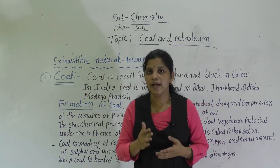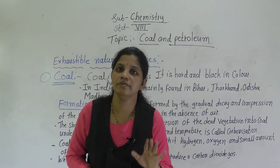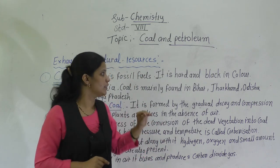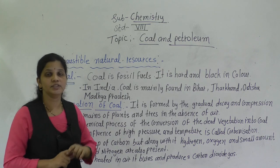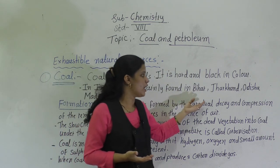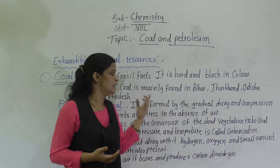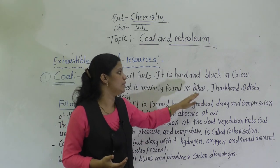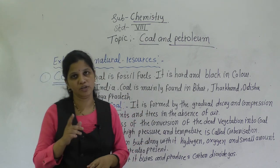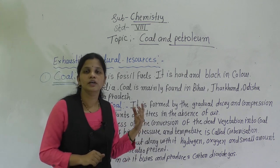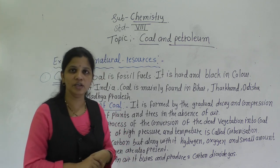Coal is a fossil fuel. It is hard and black in color. In India, coal is mainly found in Bihar, Jharkhand, Odisha, and Madhya Pradesh. This information is not given in your textbook, so write these extra points in your chemistry notebook.